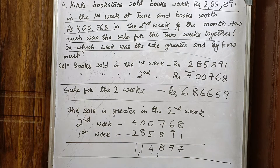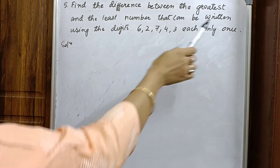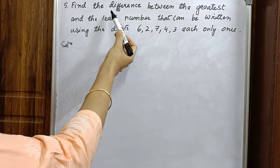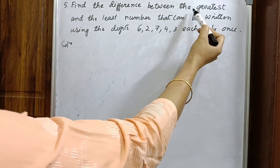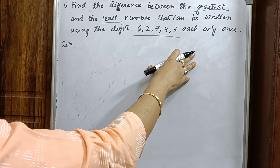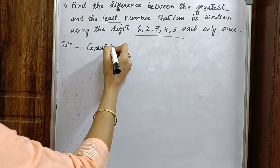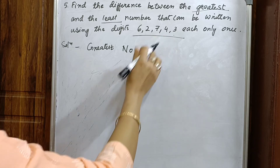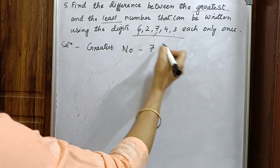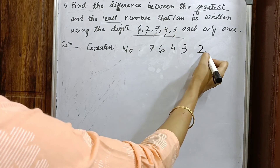Let's do question five. Find the difference between the greatest and the least number that can be written using the given digits, each only once. We need to find the greatest number and the least number formed by those digits. For the greatest number, arrange the digits from largest to smallest: 7, 6, 4, 3, 2.